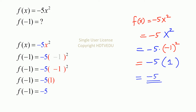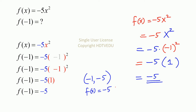So what is negative 5 times 1? Negative 5. So what is our point? When x equals negative 1, y equals negative 5. Our function is negative 5 times x squared.